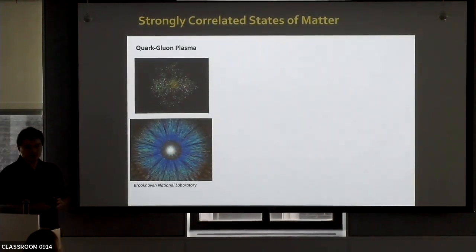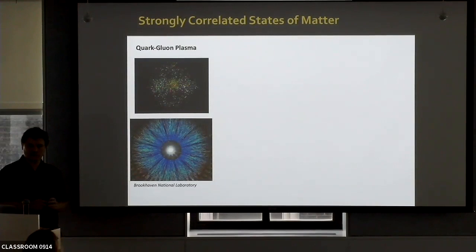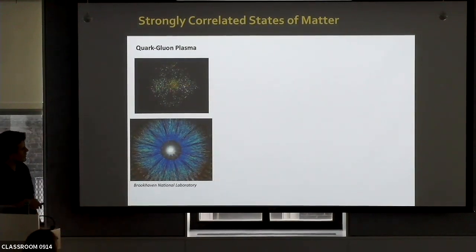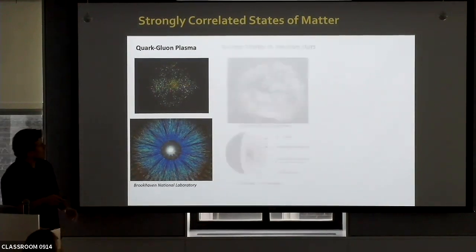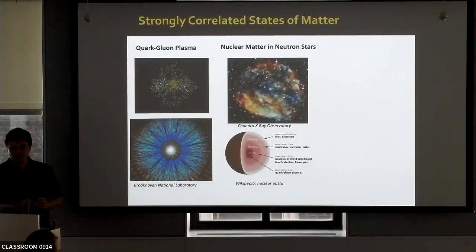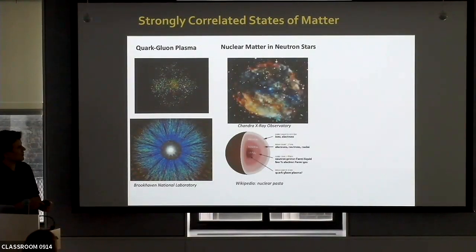This occurs, for example, in the plasma — a state of matter that happens a few nanoseconds or microseconds after the Big Bang, and that we can recreate now in collisions between heavy ions. This also happens at the different phases of nuclear matter in neutron stars — these are also very strongly correlated phases of neutrons.